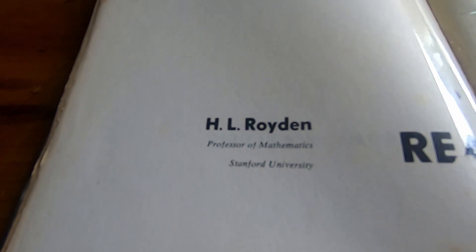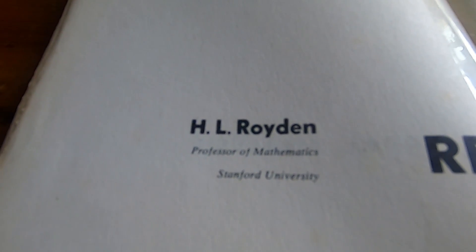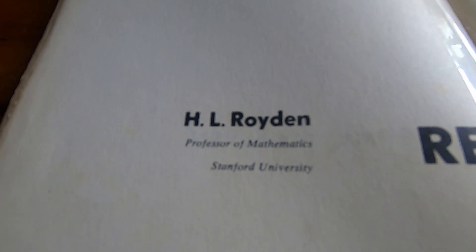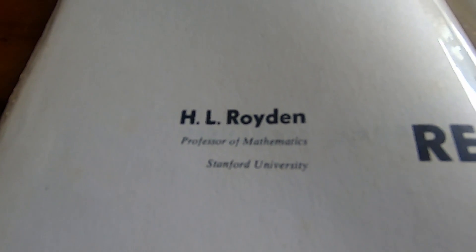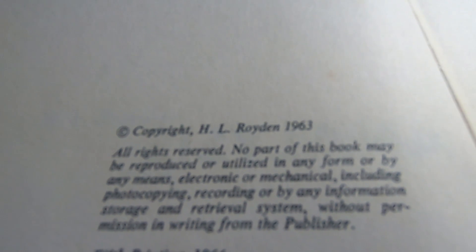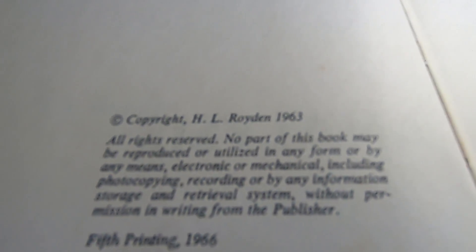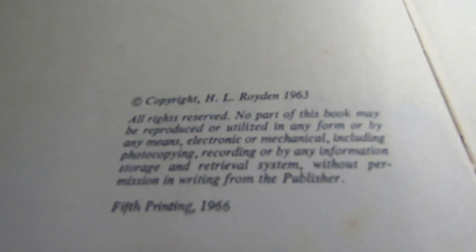H.L. Royden, professor of mathematics, Stanford University. That is an awesome school. It's one of the best schools in the world for mathematics. So the book was originally made in 1963. So this is a 60s math book and this is the fifth printing, 1966. Really, really old school.